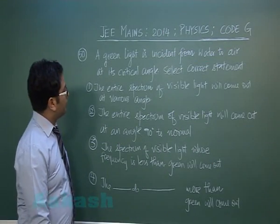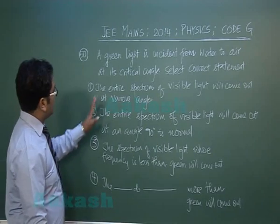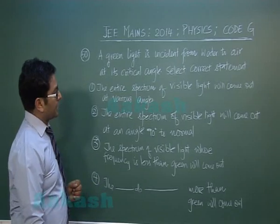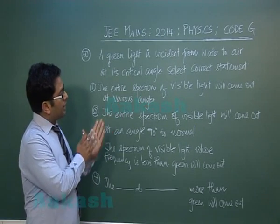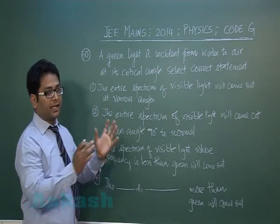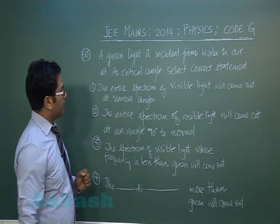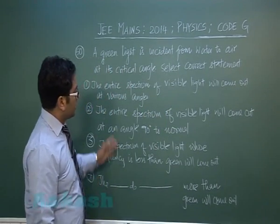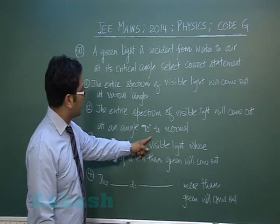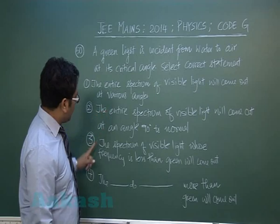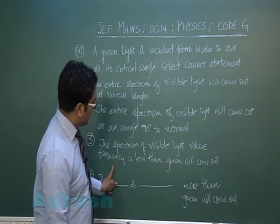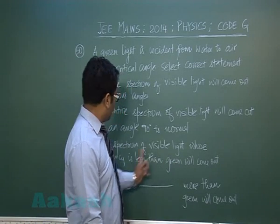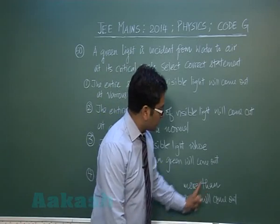Question number 50 is from ray optics. Green light is incident from water to air at its critical angle. From this fact, we must determine what happens to the entire visible spectrum. The spectrum of visible light with frequency less than green will come out, while the spectrum with frequency greater than green will undergo total internal reflection.